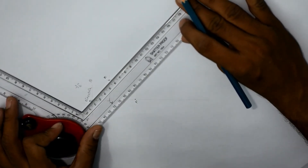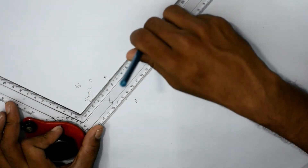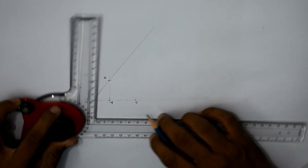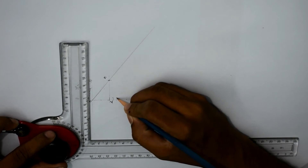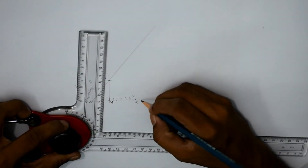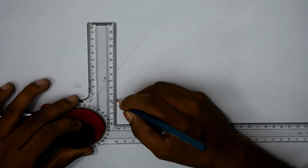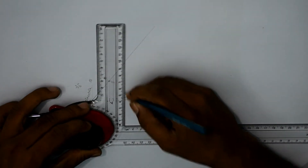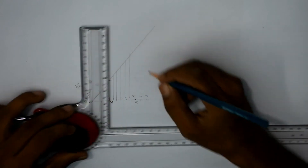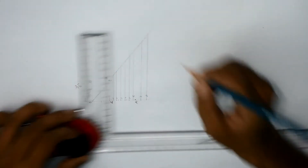We join O and E and extend the line above. Then we take several horizontal lines — one, two, three, four, five, six, seven, eight — at arbitrary spacing. The distance between these lines doesn't matter; the more lines we take, the more accurate the hyperbola will be. I am taking eight lines here, marking them as 1-dash through 8-dash.